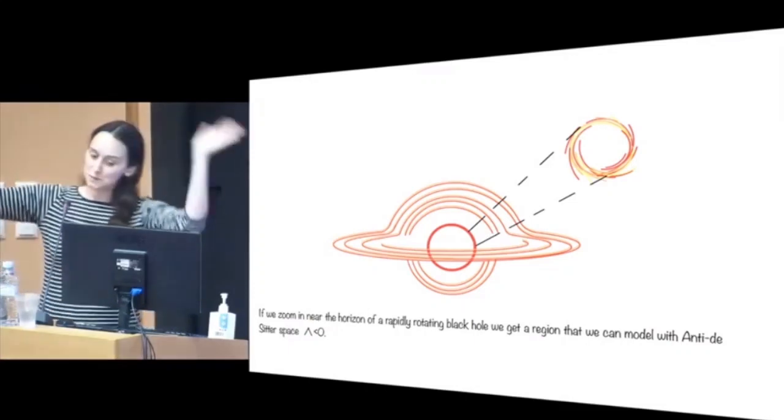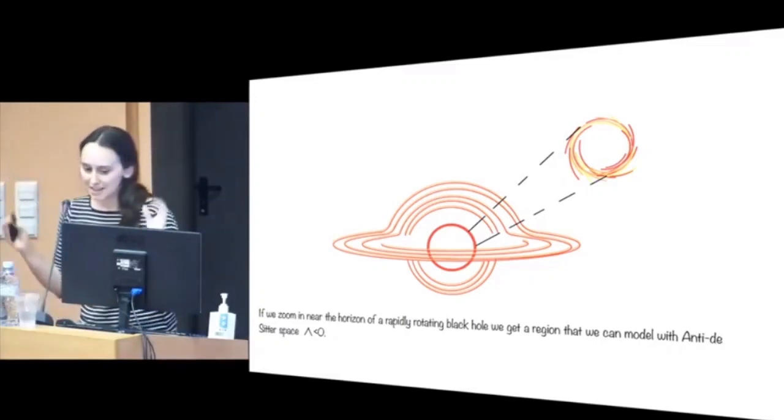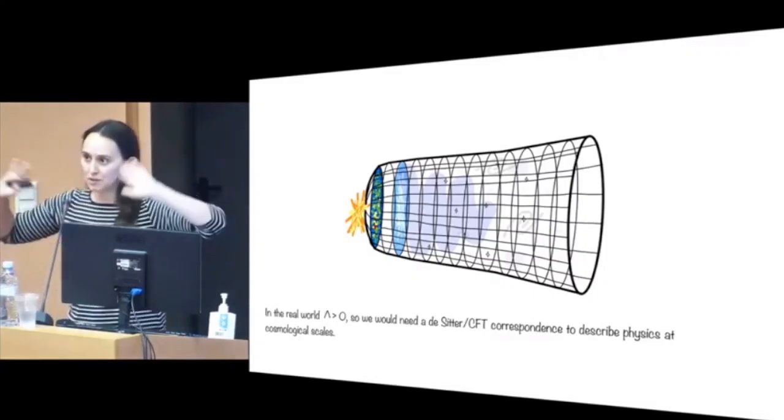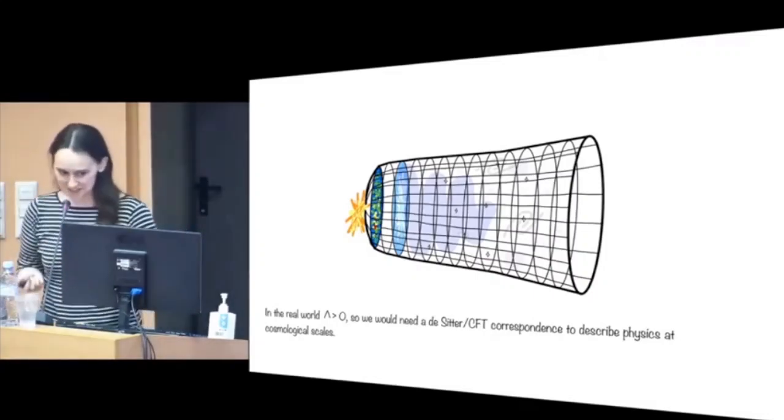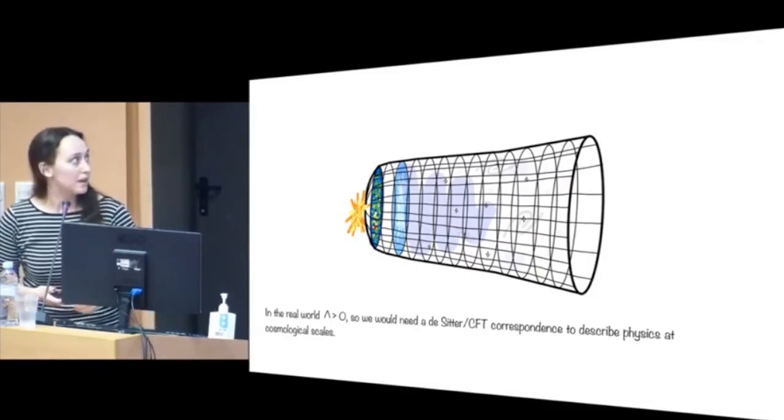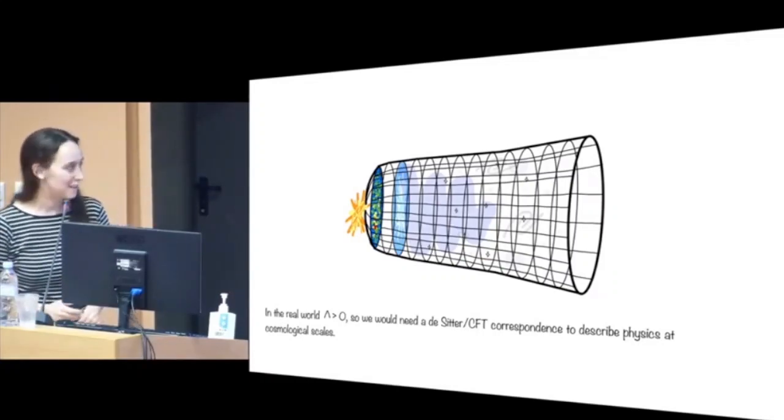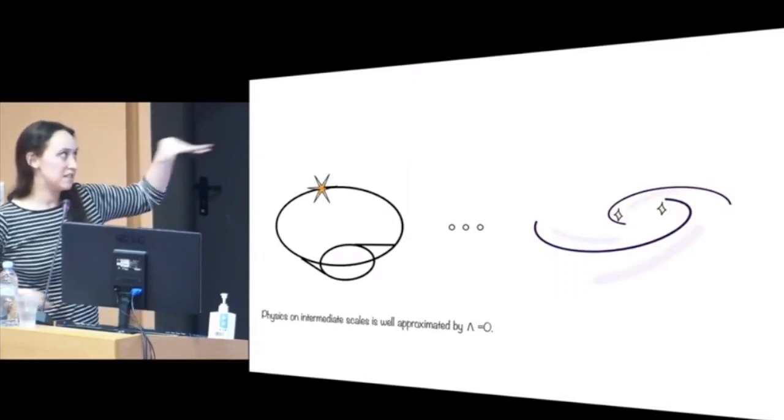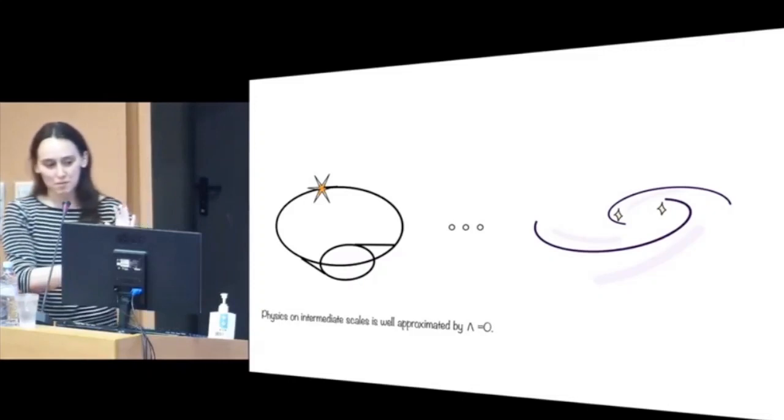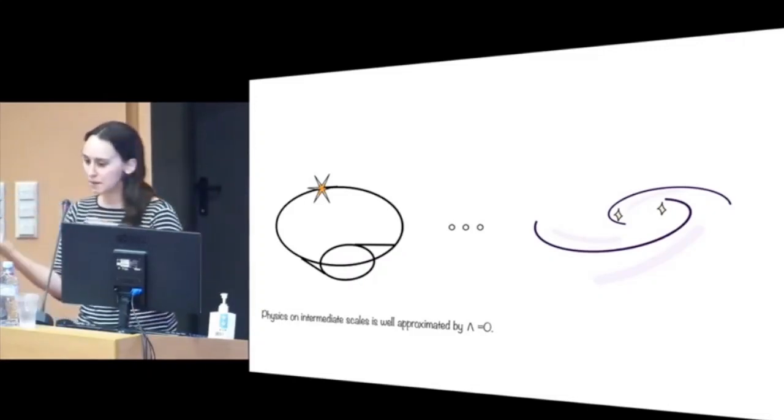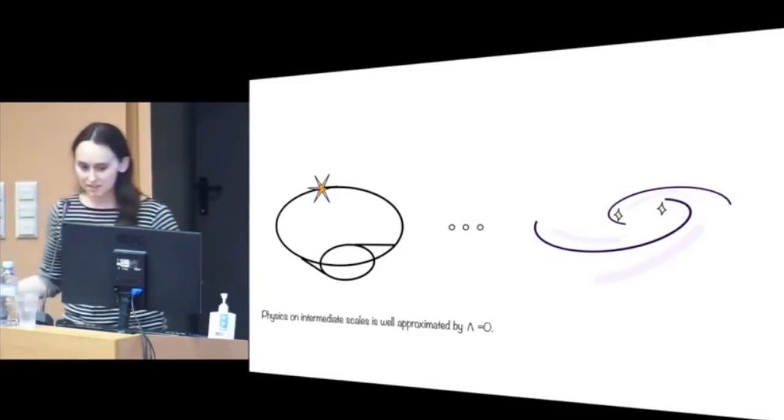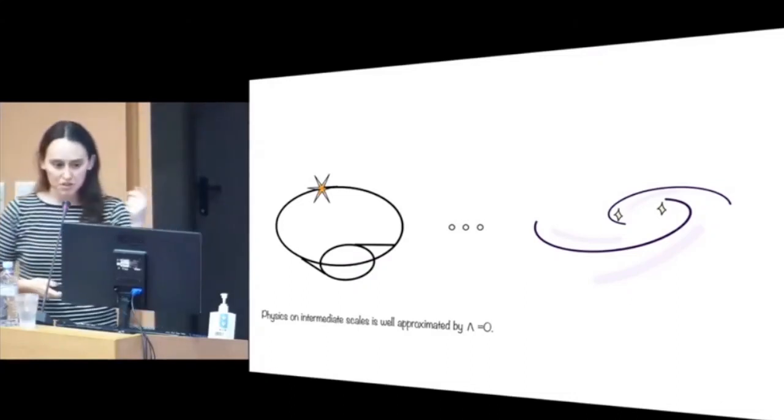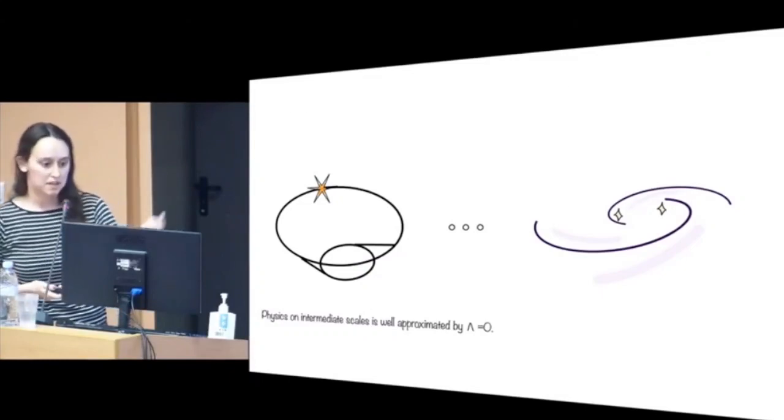If you wanted to stick to some ADS geometry, you could zoom in on some near-extremal, near-horizon region and have some sector that's ADS. But we really want to go out to a cosmological version where you have the right sign cosmological constant. The program I'm going to talk about today, Celestial CFT, is trying to do this happy medium where we're spanning physics from collider scales up to measuring gravitational radiation, which is well approximated by vanishing cosmological constant.